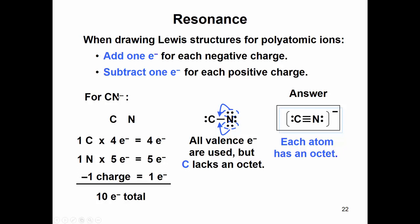So here we have a negative one charge, and so we would add up our valence for carbon, so that's four. We have one nitrogen, that's five, and then we would have to add one electron for that negative charge.